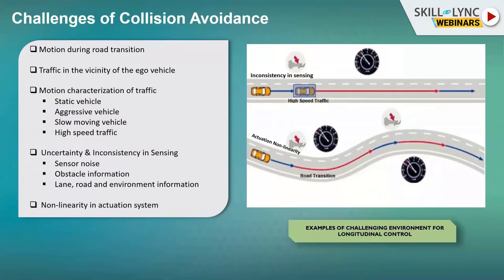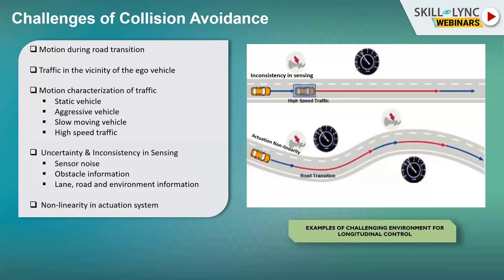The major challenges of a robotic system lie in the sensing associated with the environment and the actuation system associated with vehicle dynamics. Critical challenges include motion during road transitions like straight to curved roads, traffic in the vicinity of the ego vehicle, unpredictable motion of traffic vehicles such as lack of free space and crowded traffic, and different traffic models like highly aggressive vehicles, high-speed traffic, slow-moving vehicles, or static vehicles. All of these traffic characterizations pose a threat and challenge to the collision avoidance feature.